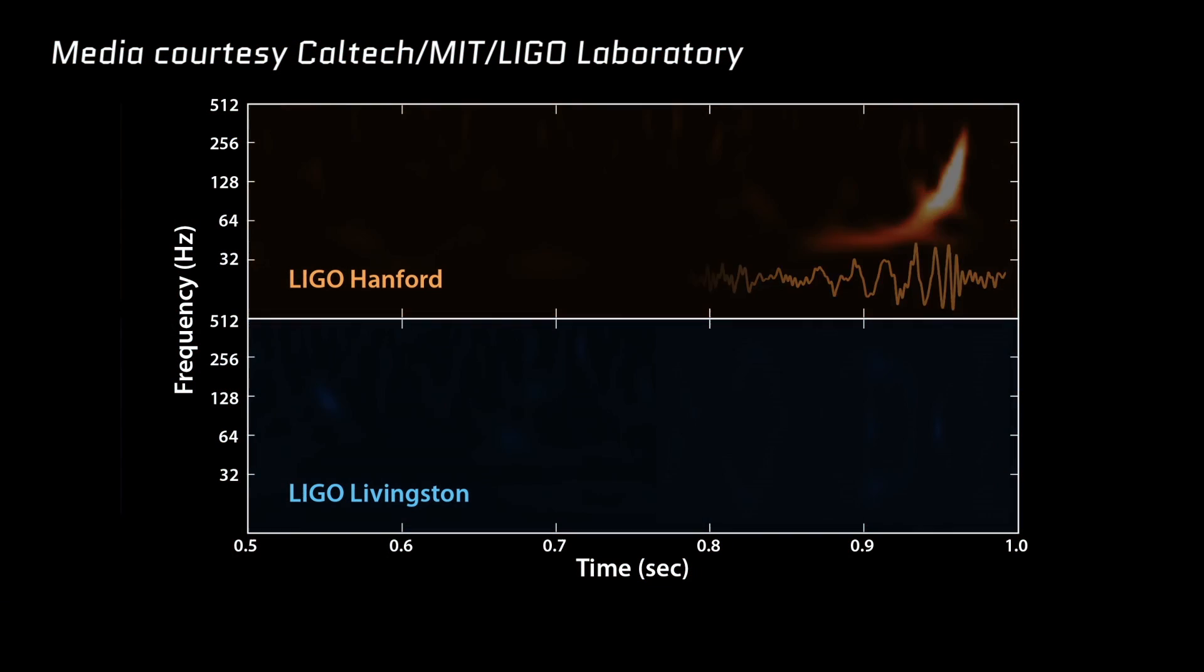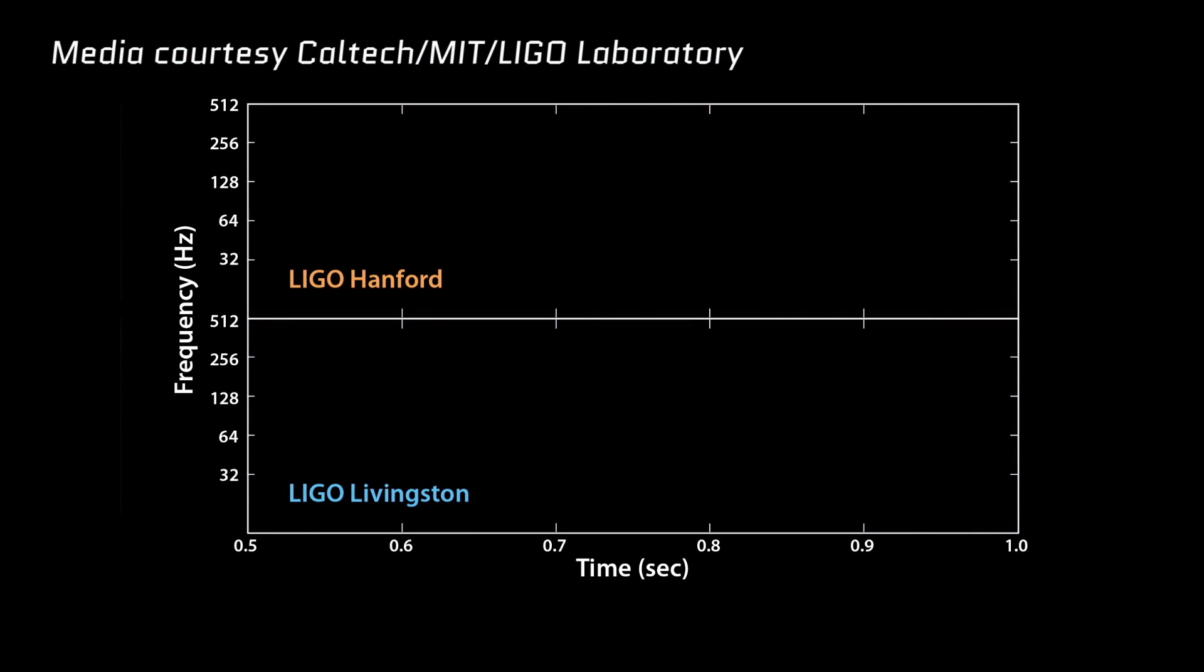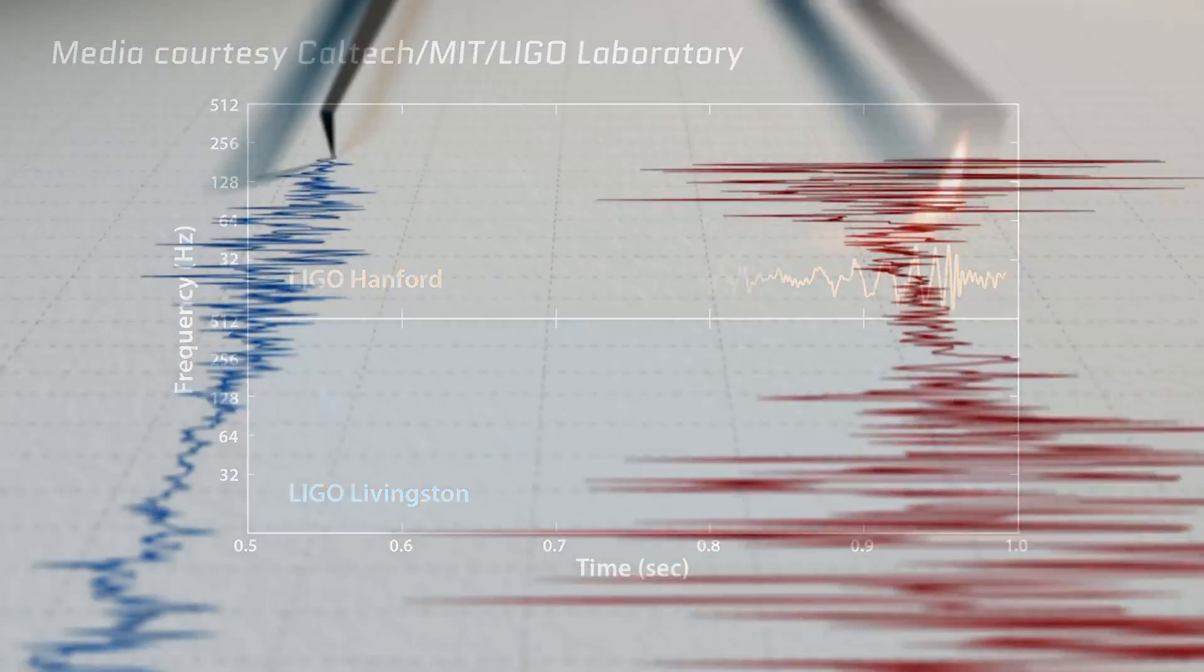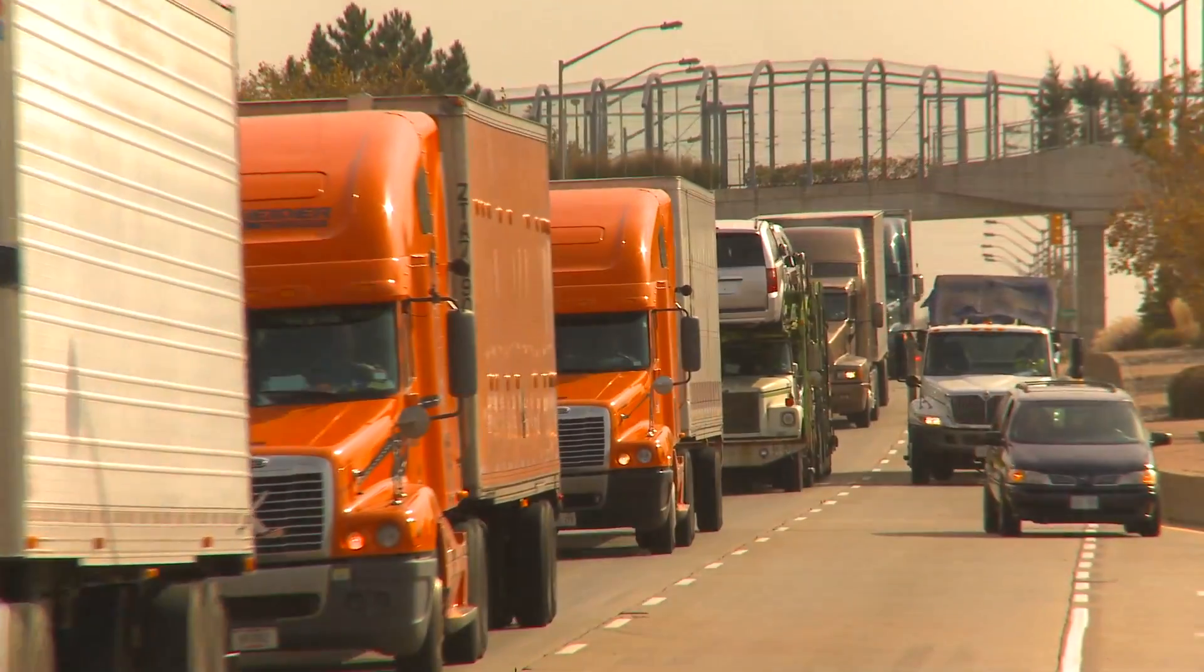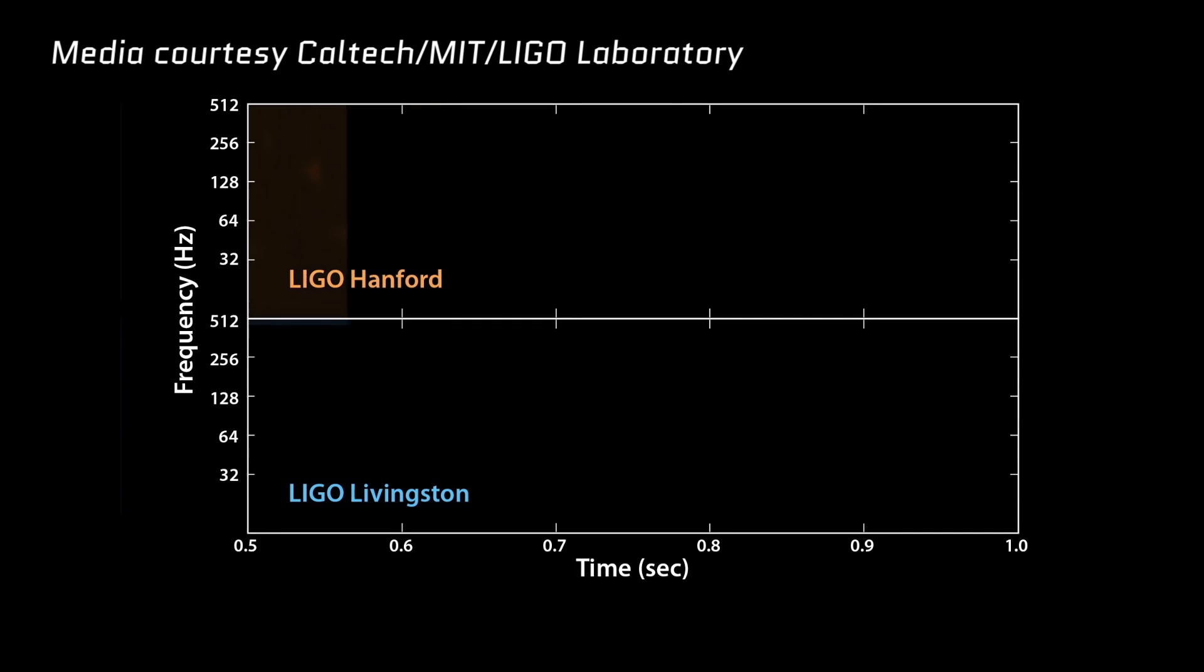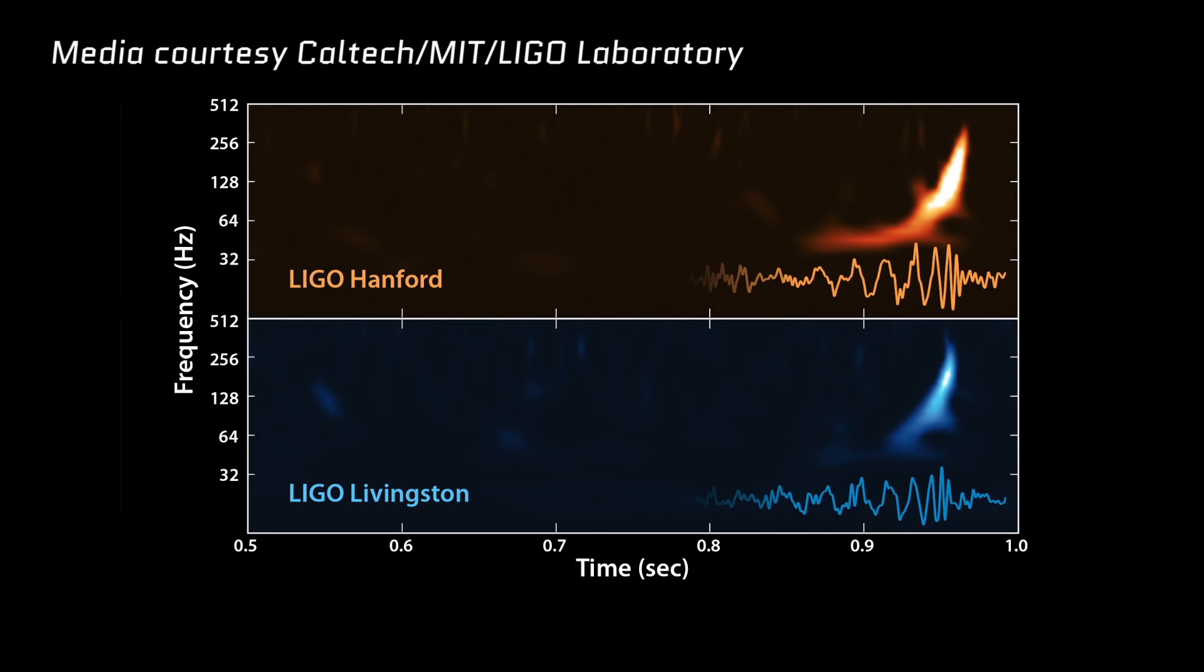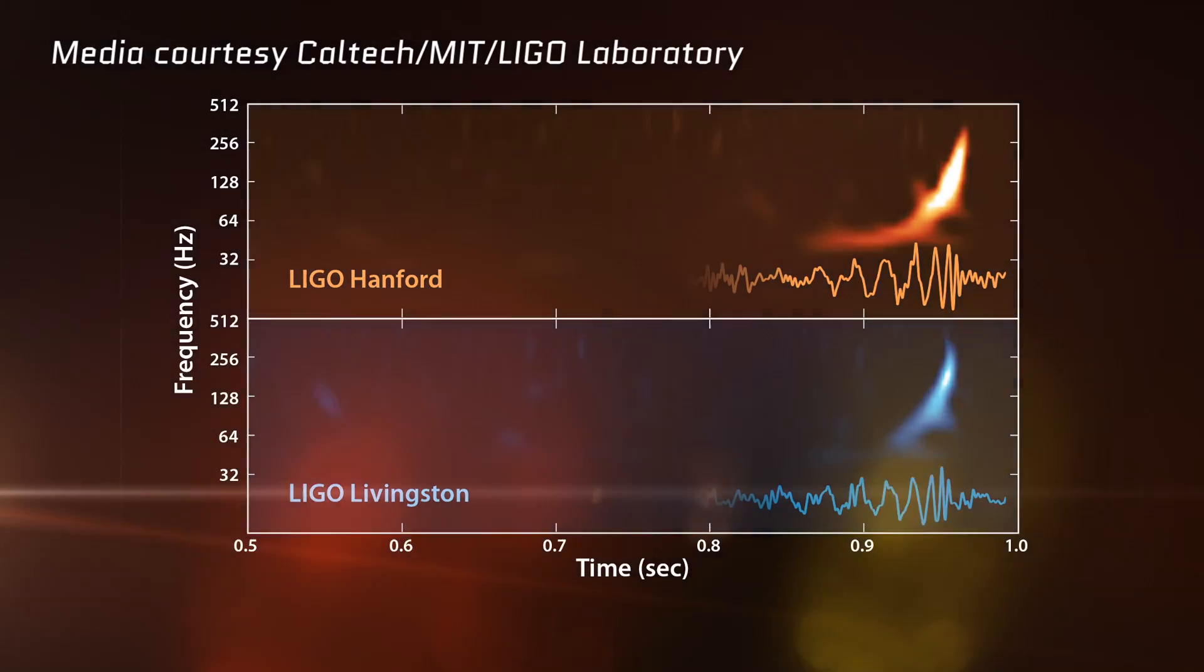So why are there two detectors, and why are they so far apart? Well, it's to make sure that it's not a false positive. You see, if one detector picks up a hit, but the other one doesn't, that suggests some sort of local event has set off the detector. Maybe seismic activity, or even just a heavy truck rolling by. But if one detector picks up a gravitational wave, and the other picks it up within 10 milliseconds, you know you got something.